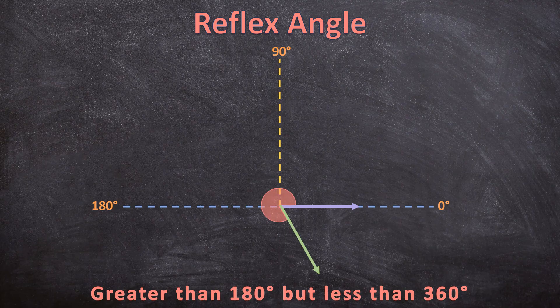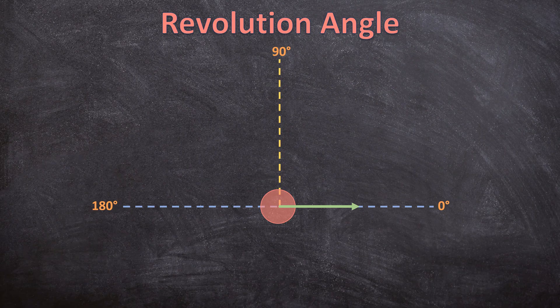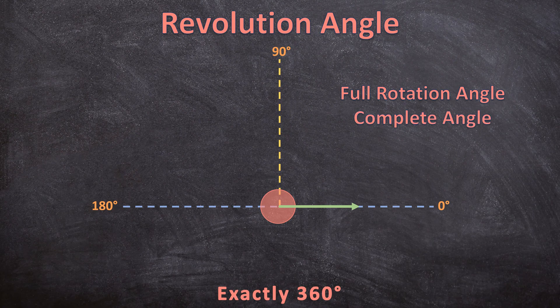This angle is also a reflex angle. But what if I rotate my ray even further so that our two rays are on top of each other again? Now this ray has made a complete rotation, and this angle is called a revolution angle — exactly 360 degrees. You may also hear it called a full rotation angle or a complete angle, but it is exactly the same: a 360-degree angle.